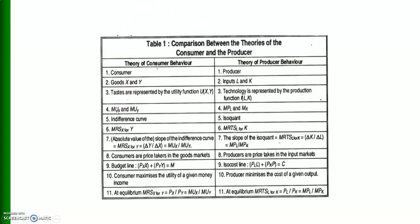In consumer theory we have marginal utility of X and marginal utility of Y. In producer theory we have marginal product of labor and marginal product of capital. In consumer theory we have indifference curves; in producer theory we have production indifference curves, or isoquants.